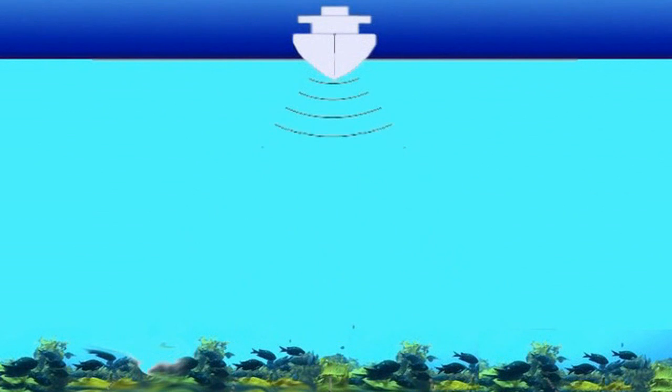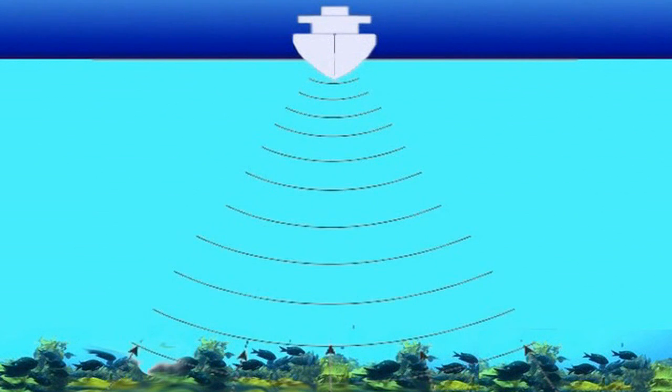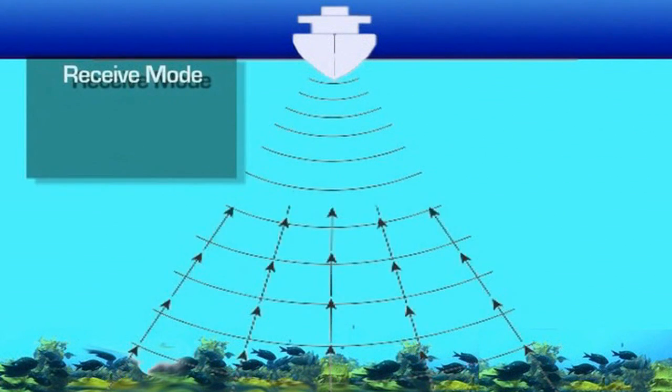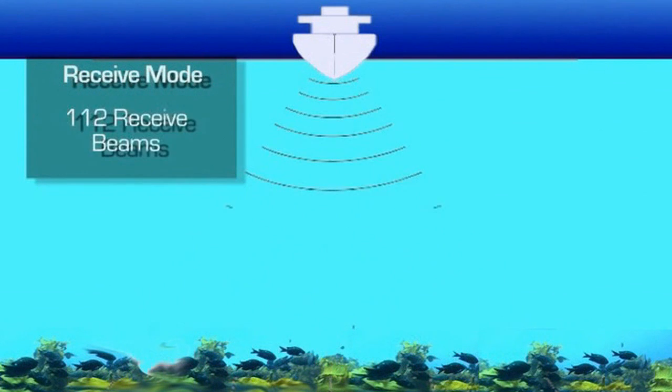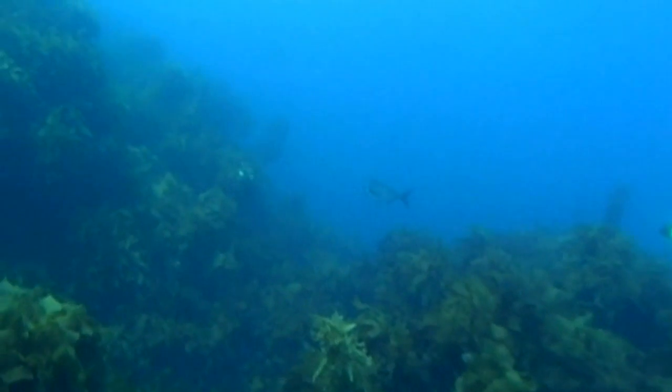The WMB160 has a transmit beam pattern covering 120 degrees from port to starboard. On receive mode, this beam is broken into 112 receive beams to provide a very accurate profile of both the sea floor and fish in the water column.